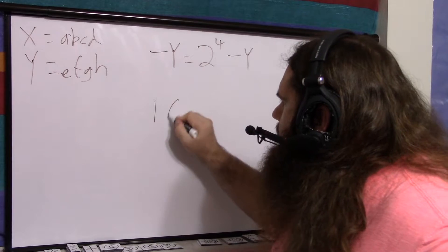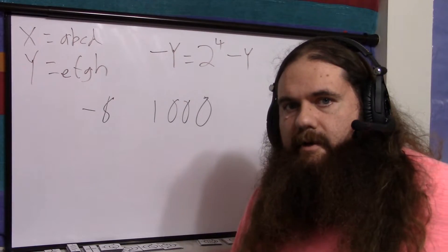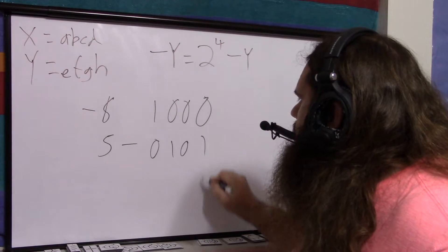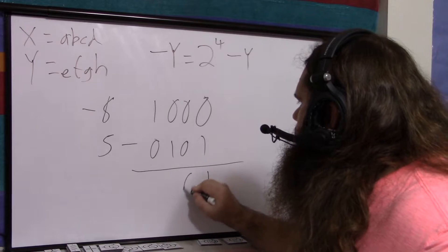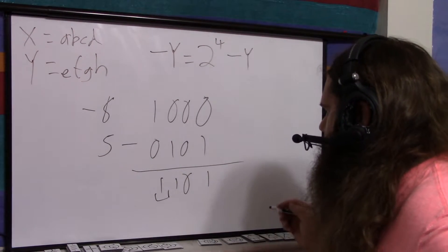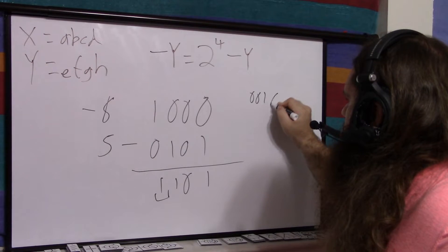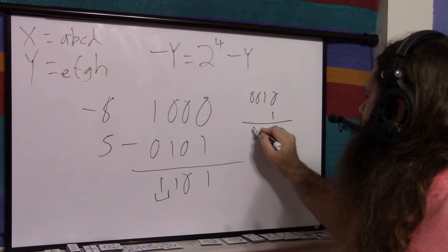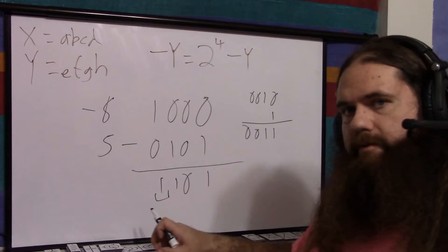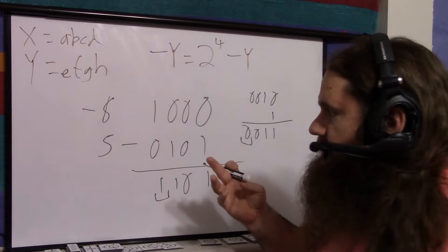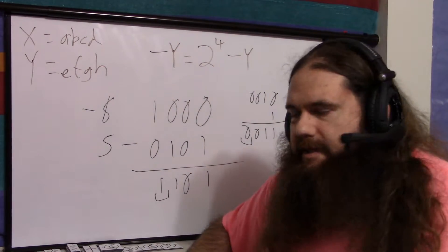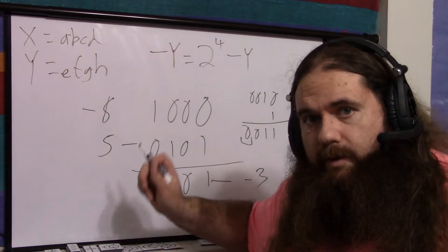Let's do an example. If we have negative 8 and we add 5 to it — positive 5 is 0, 1, 0, 1 — we add them together and get 1, 0, 1, 1. That's still negative, so let's take the two's complement. Flip the bits to get 0, 0, 1, 0, add 1 to get 0, 0, 1, 1. What is that? That's 3. The first bit is 0, so it's positive. We successfully un-negated it. What is 5 minus 8? It's negative 3. This is negative 3. So it works.